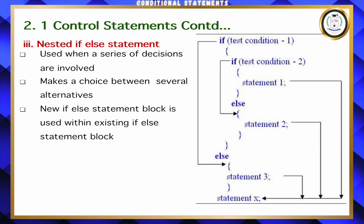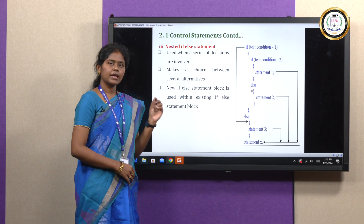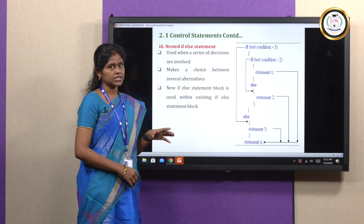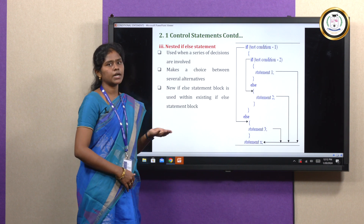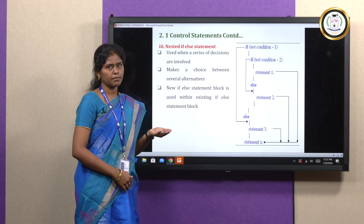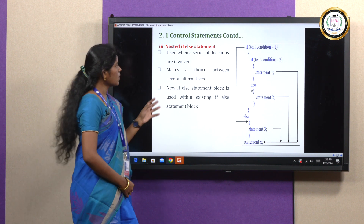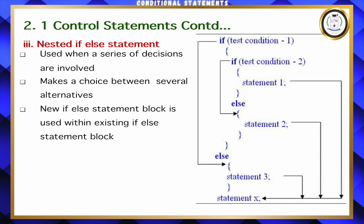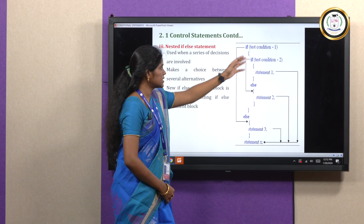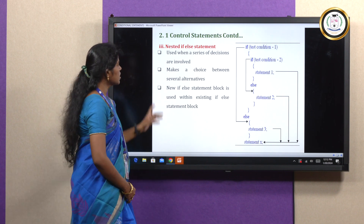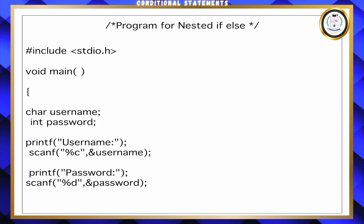We are going to see the nested if-else statement. In a program, if there is only one condition, we can use the simple if or if-else statement. If we have multiple conditions — more than one — we can go for the nested if-else statement. In the nested if-else statement, under one if condition, you can include another if statement also. This is known as nested if-else.